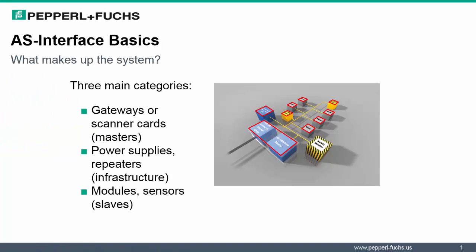Now, let's understand further what makes up an AS Interface system. There are three primary categories: Gateways or Scanner cards, known better as masters, power supplies, repeaters, which make up the infrastructure, and modules or sensors that are the slaves.